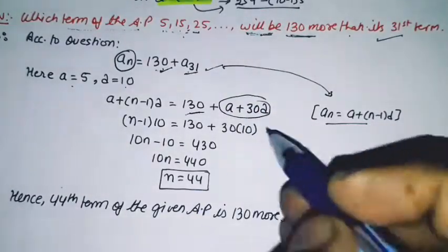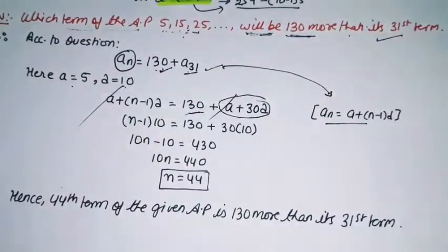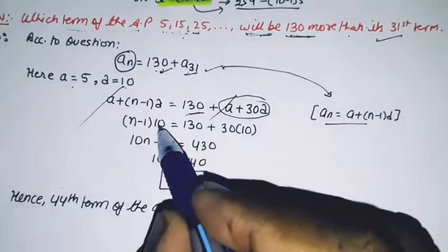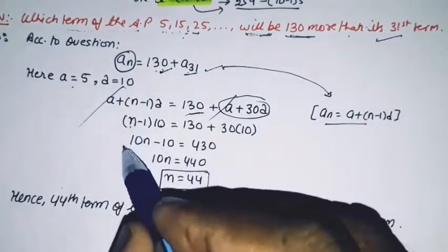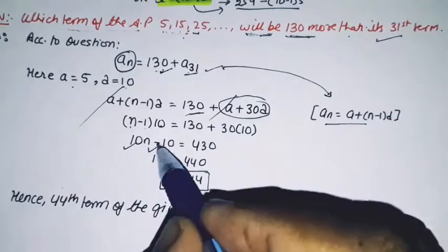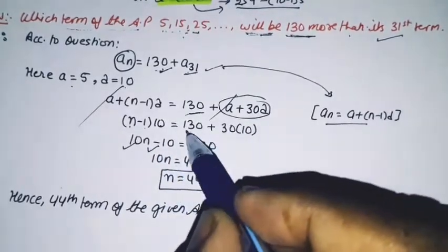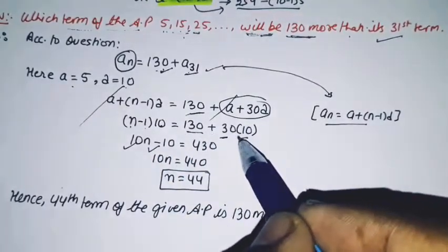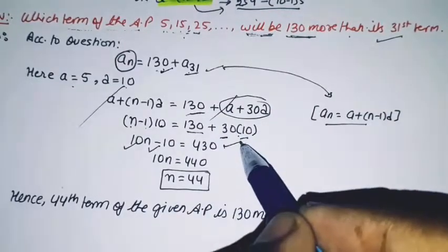The a values cancel out. Substituting d equals 10: (n-1)10 = 130 + 30(10). This simplifies to 10n - 10 = 430, so 10n = 440 and n = 44.